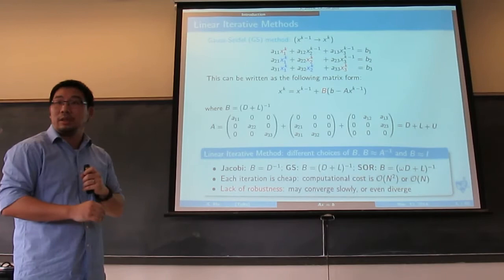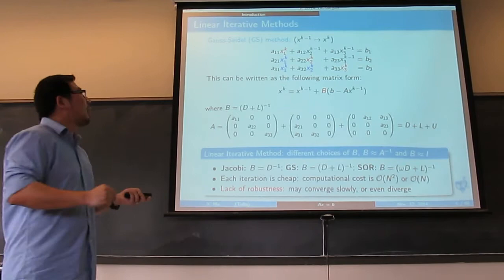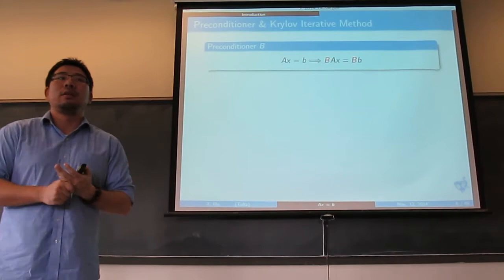Constructing a linear iterative method is all about how you construct this B. The B should be a compromise between A inverse and identity. Another way to use B is as a preconditioner.